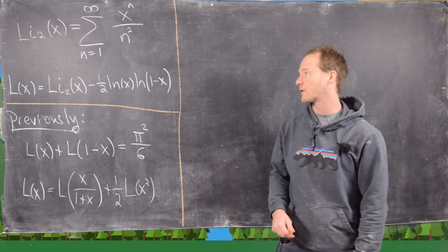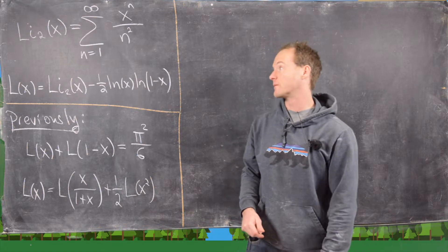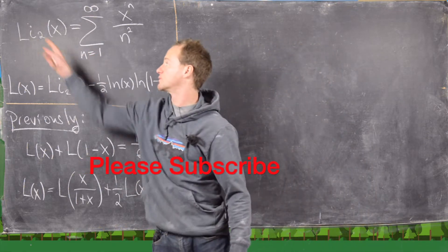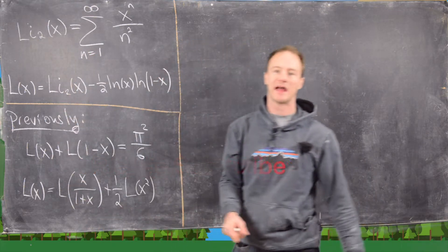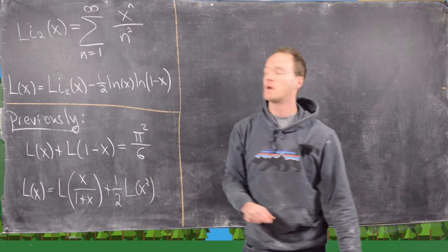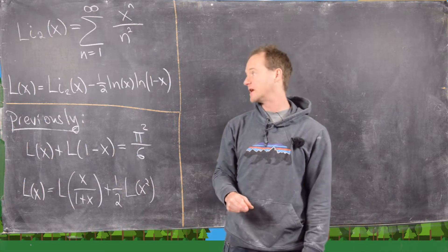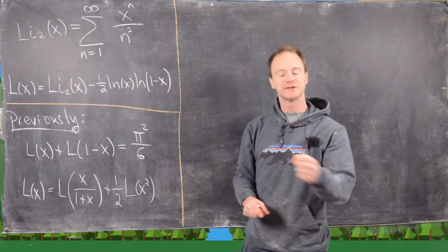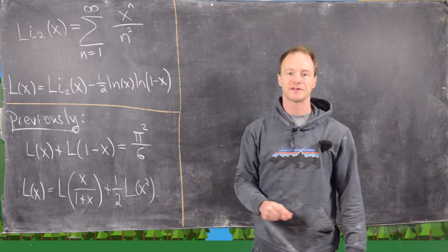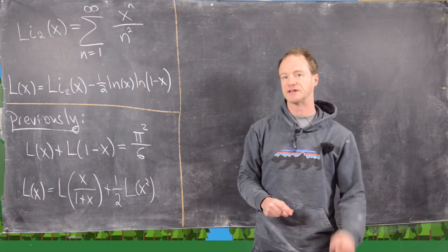Here we're going to do a continuation of a previous video where we looked at the dilogarithm function. Let's recall that the dilogarithm function, which we'll denote by li2 of x, is given by the sum n equals 1 to infinity of x to the n over n squared. Obviously if you plug in x equals 1, you get the sum of the reciprocals of the squares, which we know to be equal to pi squared over 6.